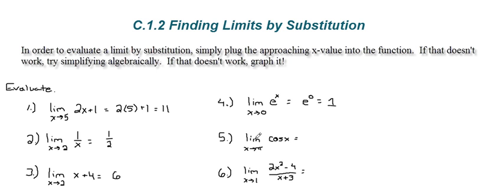For number 5, limit of cosine x as x approaches pi. Well, that's cosine of pi. And knowing your trig values, this is going to come out to be negative 1. You can also find that on your calculator if you are set to radians mode.